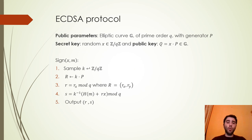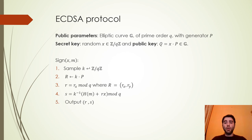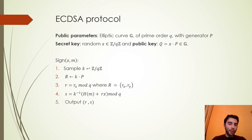The ECDSA protocol works in the following way. It takes as public parameters an elliptic curve G of prime order Q with a generator point P. The secret key is a random element x chosen in Z_Q, and the public key is an elliptic curve point Q computed as x multiplied by P. To sign a message M, the steps are: first sample a k in Z_Q, then compute R as k multiplied by P, take the first component of big R which is little r, and compute S as the multiplicative inverse of k multiplied by a hash function on M plus r times x. The output is the pair (r, S).